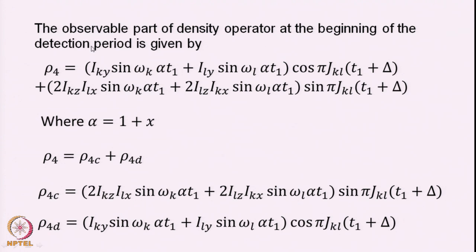We will not go through the full calculations as we did for the COSY, since we have already indicated how this calculation has to be done. One can go through the same procedure, calculate the density operator, remove the non-observable parts, and keep only the observable parts. Going through all of this calculation, you arrive at rho4 — the density operator at the beginning of the detection period. This calculation is done taking both K spin evolution and L spin evolution, and only those parts of the density operator that are observable are retained. These will evolve in the T2 period to produce observable magnetization.